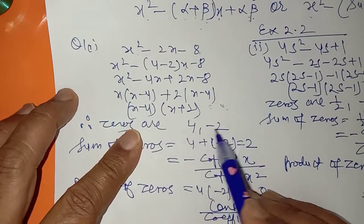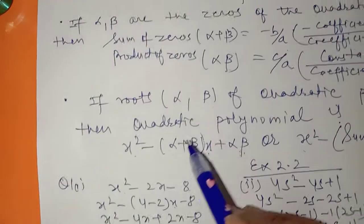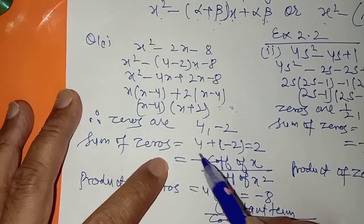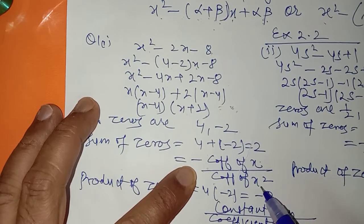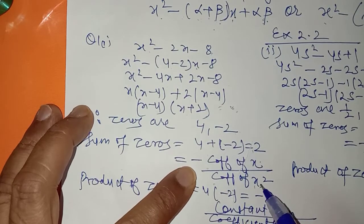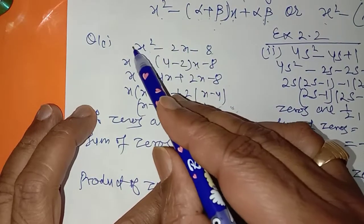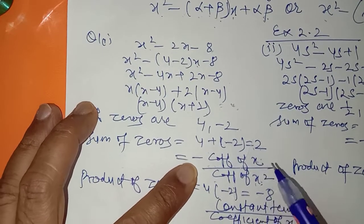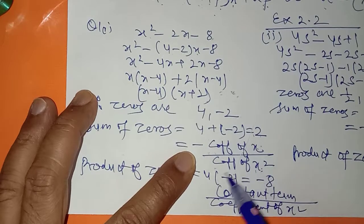Now you have to show the relationship. First find the sum of the zeros: add 4 and minus 2 to get 2. This should equal minus coefficient of x upon coefficient of x squared. Sum of the zeros equals minus coefficient of x upon coefficient of x squared: minus coefficient of x is minus 2, upon a which is 1, giving 2. So the sum of the zeros equals 2, which matches minus b upon a. Last में लिख देना है: sum of the zeros equals minus coefficient of x upon coefficient of x squared.